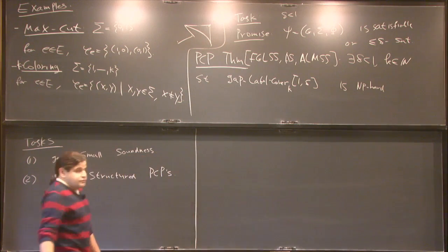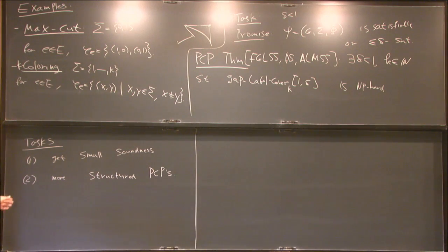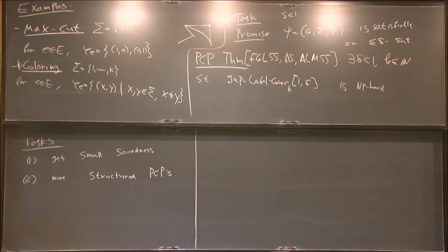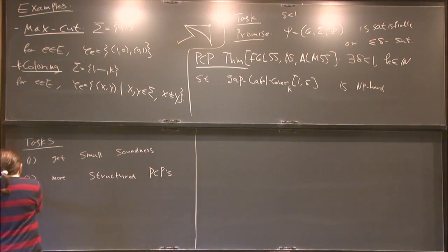Does that include increasing K? K will always be a constant, but it will be larger and larger as this talk goes on. If K equals two, you cannot get small soundness, because for every edge there will be at least one satisfying assignment out of four. The standard scale is for non-constant alphabets, but that goes into the first point. So we want to get smaller soundness.